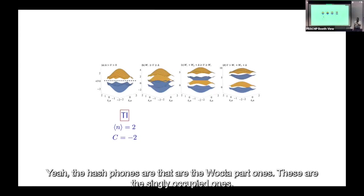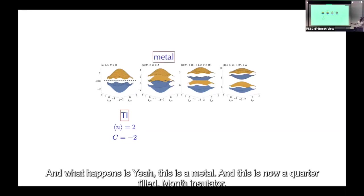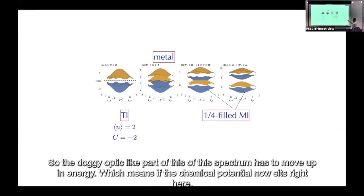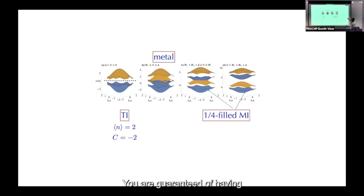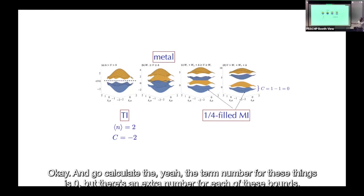The hashed states are doubly occupied, the unhashed are singly occupied. Here we have a metal, and now a quarter-filled Mott insulator: the doubly occupied part of the spectrum moves up in energy. If the chemical potential now sits right in between, you are guaranteed of having topology at the quarter-filled state. The Chern number of these individual sectors is well-defined.